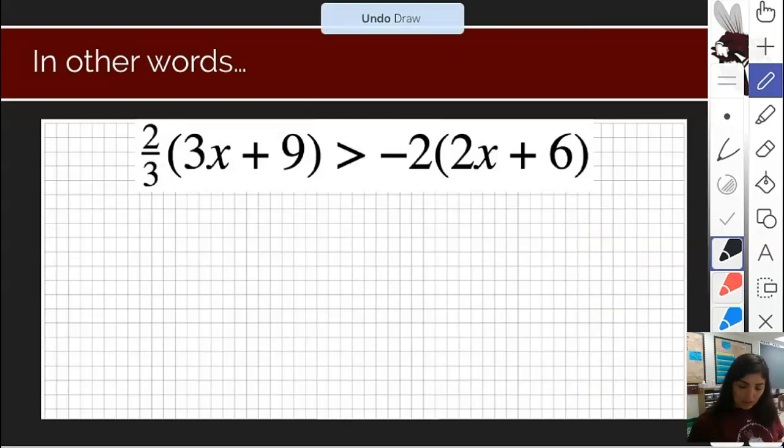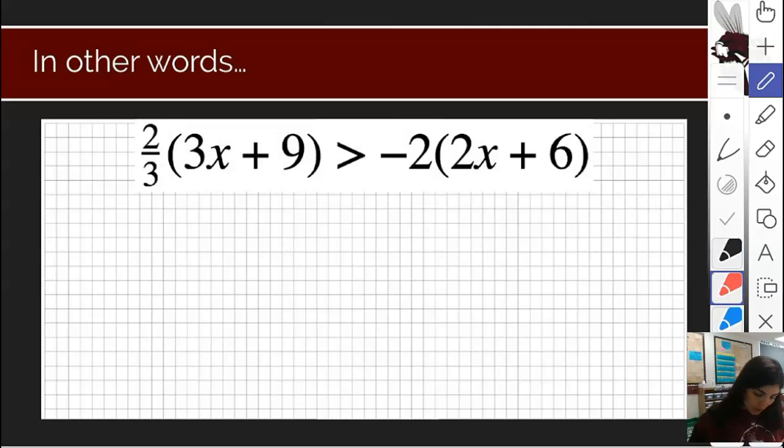Looking at this first example, we're going to use the same process we did for solving equations. We start off with distribution. We have to distribute the number in front of the parentheses to everything inside. So we multiply 2/3 times 3 and 2/3 times 9. 2/3 times 3x is 2x, and 2/3 times 9 is 6. Bring down the symbol, which is greater than. Then we distribute again. Negative 2 times 2x is negative 4x, and negative 2 times positive 6 is negative 12.